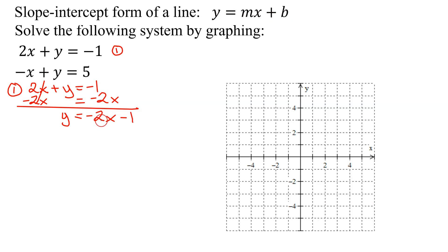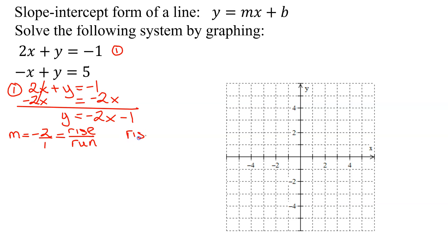The coefficient of x is the slope, so I know that m is equal to negative 2. I need it to be a fraction, so just divide it by 1. When we graph it, the slope is rise divided by run. When you have a negative slope, you always put the negative in the numerator. So my rise is negative 2, meaning I go down 2, and my run is positive 1, going left to right.